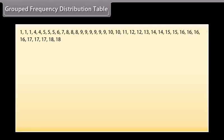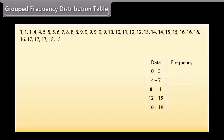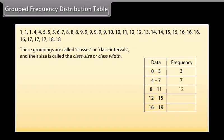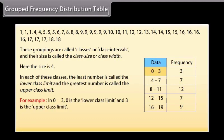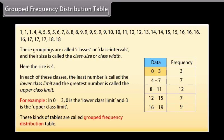Grouped frequency distribution table. These groupings are called classes or class intervals and their size is called class size or class width. Here the size is 4. In each of these classes, the least number is called the lower class limit and the greatest number is called the upper class limit. For example, in 0 to 3, 0 is the lower class limit and 3 is the upper class limit. These kinds of tables are called grouped frequency distribution table.